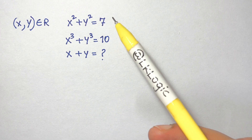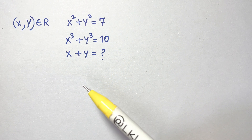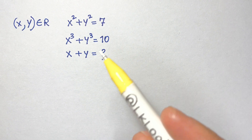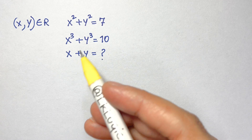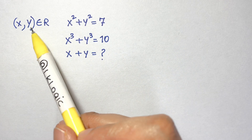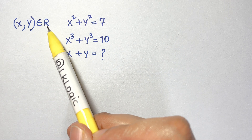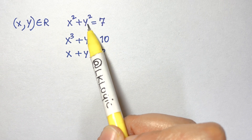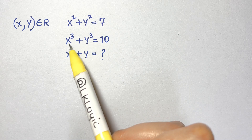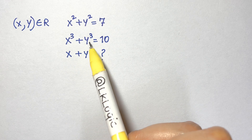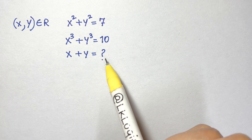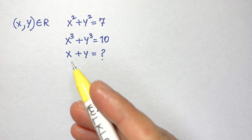Hi everyone, a very nice algebra problem. Let's solve this. We have x, y belonging to real numbers. x squared plus y squared equals 7, x cubed plus y cubed equals 10. What is x plus y?